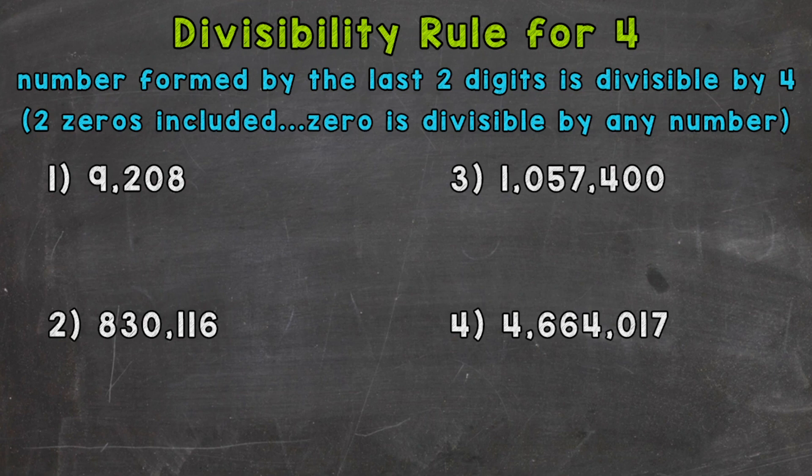Let's jump into number 1 and see what this rule means. So again, we need to take a look at the last two digits. So number 1, we have 9,208. The last two digits are a 0 and an 8, so that's an 8 there. Is 8 divisible by 4? Can we do 8 divided by 4 and get an answer without a remainder? Yes, so that means our original number of 9,208 is divisible by 4 as well.